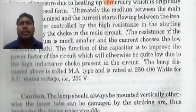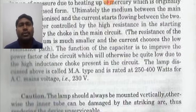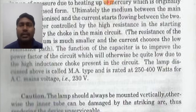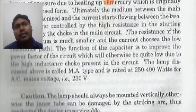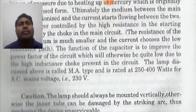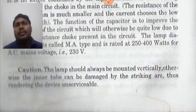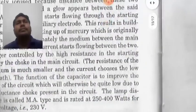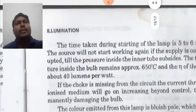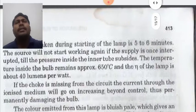As a precaution, the mercury vapor lamp should be mounted vertically — unlike the sodium vapor lamp which is used horizontally. The inner tube can be damaged by the striking arc if not mounted correctly. The time taken during starting of the lamp is five to six minutes.